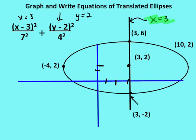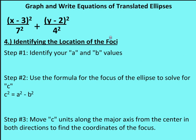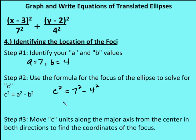We've completed three of the five steps. Next, we identify the location of the foci. Using a equals 7 and b equals 4, we apply the formula c squared equals a squared minus b squared. So c squared equals 7 squared minus 4 squared, which gives c squared equals 33, or c equals plus or minus the square root of 33.